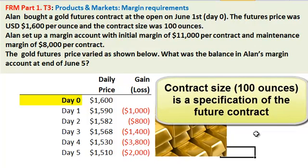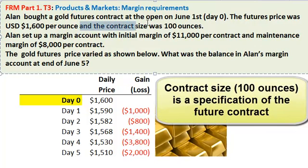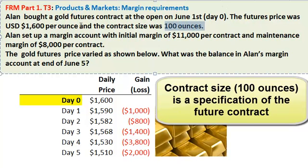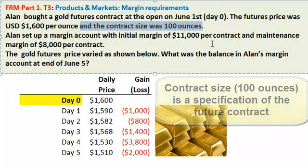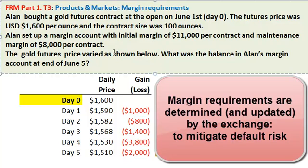We make two quick points before we pause the video. The first is, we might not have gotten this information. It was nice of them to tell us that the contract size was 100 ounces, although we might be expected to know that, as contract size is a specification of the standardized futures contracts. We might be expected to know that a gold futures contract is 100 troy ounces, so this information could have been omitted. Secondly, these margin requirements are certainly not decided by Alan — they are requirements determined by the exchange, updated on a semi-regular basis based on the volatility of these commodities. So Alan has no choice about the initial margin and the maintenance margin.